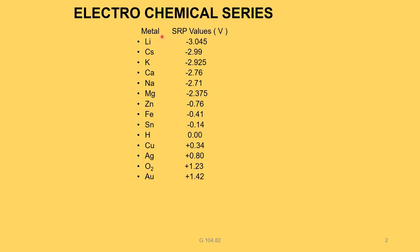In the electrochemical series, if we take any two metals, a galvanic setup is formed. The metal placed higher in the series acts as the anode, where oxidation takes place. The metal placed lower acts as the cathode, where reduction takes place. In rusting of iron, iron is higher and acts as anode; oxygen is lower and acts as cathode.